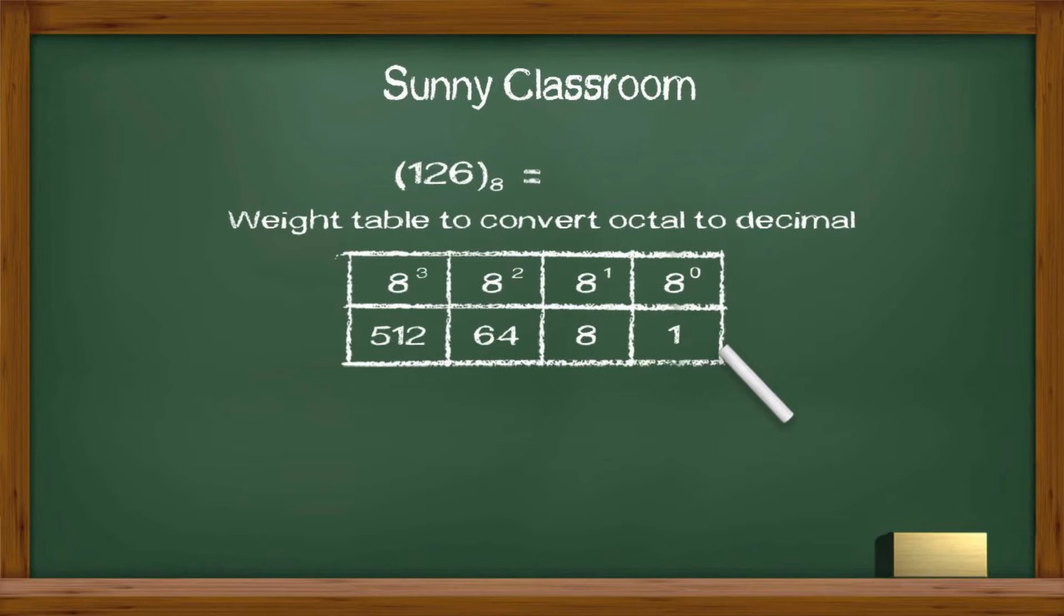Octal is a positional number system. Each position has some powers of 8. We write down 126 under the table, making sure they match their positions. Now let's do it.